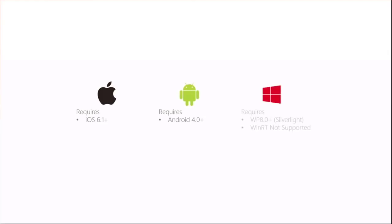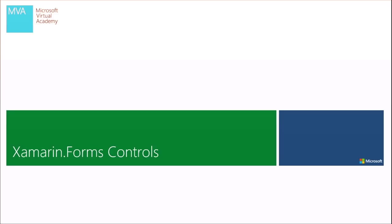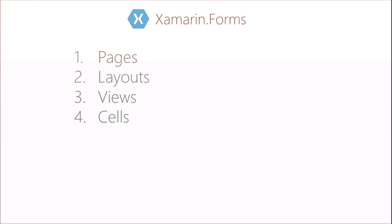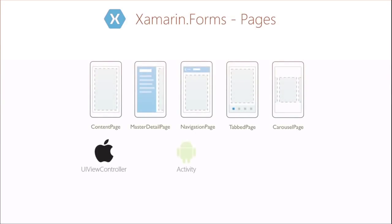Some of the requirements: on iOS it requires 6.1 plus — if you want to support anything below that you're not going to be able to use Xamarin.Forms. Android 4.0 plus. On Windows Phone it requires Windows Phone 8 Silverlight — WinRT is not supported at this point. Some of the controls available on Xamarin.Forms are split into four sections: pages, layouts, views, and cells. Pages include content page, master detail page, navigation page, and tab page — these relate to the native underlying platform classes. In iOS it's UIViewController, in Android it's Activity, and on Windows Phone it's a Page — these render down to native controls.